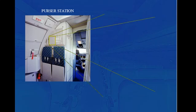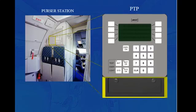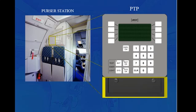The Programming and Test Panel, PTP, is located next to the Forward Attendant Panel, behind a hinged access door. It is equipped with a Cabin Assignment Module, CAM, which contains all the software of customer-specific layout and defined parameters. The PTP informs the crew about the cabin system status.